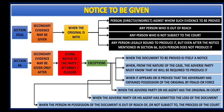The fifth exception is when the adverse party or his agent has admitted the loss of the document. When the adverse party itself says that the original has been lost or the primary evidence is lost, in that case, without notice — the word 'admission' is very important here, they have already admitted — secondary evidence may be given. The sixth and last exception is when the person in possession of the document is out of reach or not subject to the process of the court. In that case, as the person is not in reach or not subject to the court, the exception is available to give secondary evidence without giving any notice.